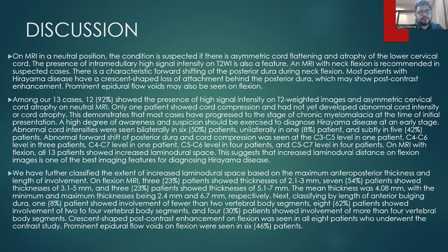Among our 13 cases, 12 showed high signal intensity on T2-weighted images and asymmetric cervical cord atrophy on neutral MRI. Only one patient showed cord compression without yet developing abnormal cord intensity at presentation, demonstrating that most cases have progressed to chronic myelomalacia at the time of initial presentation. A high degree of awareness and suspicion should be exercised to diagnose Hirayama disease at an early stage. Abnormal cord intensities were bilateral in six patients, unilateral in one, and subtle in five. Cord compression was seen at C3–C5 in one patient, C4–C6 in three, C4–C7 in one, C5–C6 in four, and C5–C7 in four patients.